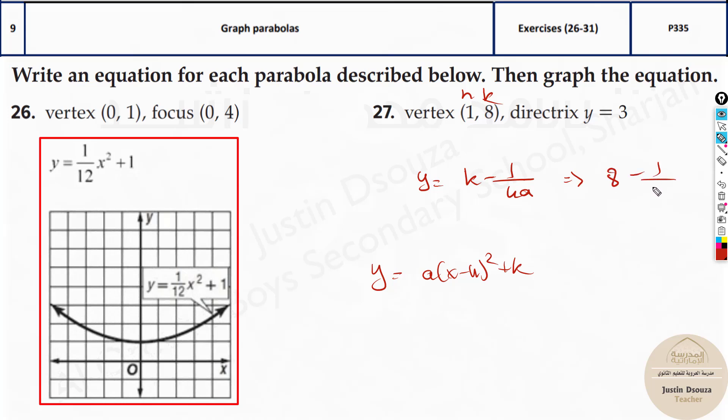It'll be 8 minus 1 by 4a. That is equal to what? 3. Y value is given as 3. So let me take this to the other side and 8 minus 3 equals 1 by 4a positive. When you solve it will be 5 is equal to 1 by 4a. It'll be 4 times 5 that is 20. It is 1 by 20. So the standard form over here is 1 by 20 into x minus 1 the whole square plus k value is 8. That's the answer.